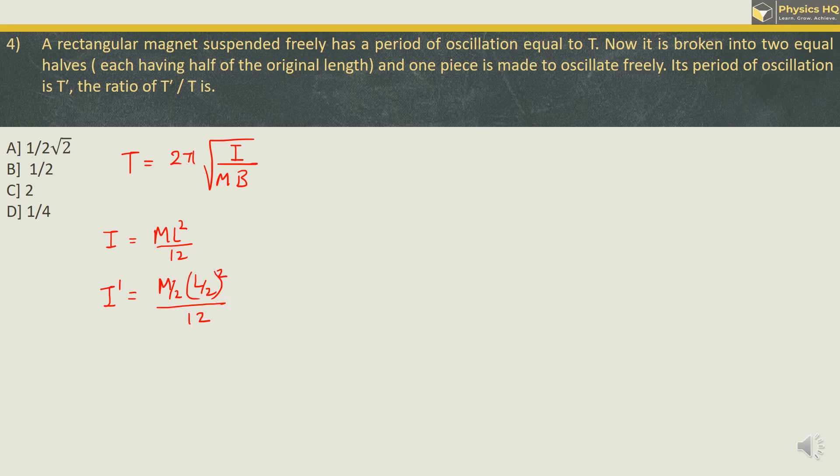Half of the length squared divided by 12. Now we can take this 1/2 of the mass outside. And L/2 squared will be 1/4. And then we are left with ML² / 12. So new moment of inertia is equal to 1/8 of the old one.